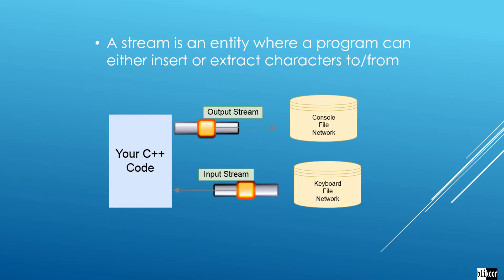I'd like to clarify what can be an input and what can be an output. An output can be one of three things: the console that we've seen already, a file your application can write to, or the network to send things to the internet. For input, we can read things from the keyboard, from a file in our C++ application, or from the network — for example, downloading things from the internet. A stream is really an abstraction of how you write things to the output and how you read things from the input.